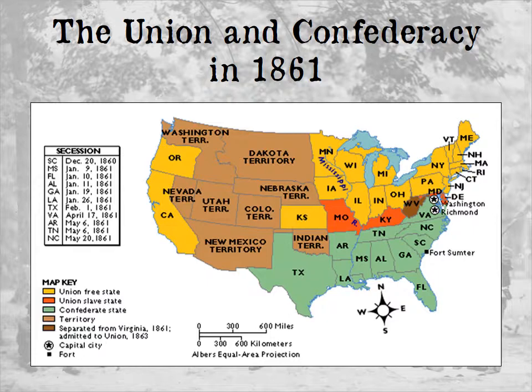West Virginia is unique because it was not even a state at the start of the Civil War — there was just Virginia, which included West Virginia's territory. When secession began, Lincoln, through his executive powers, prevented certain counties of Virginia from seceding. Those counties then became West Virginia once Virginia seceded. So West Virginia was actually created out of the Civil War. Slavery existed there and would remain until a constitutional amendment.